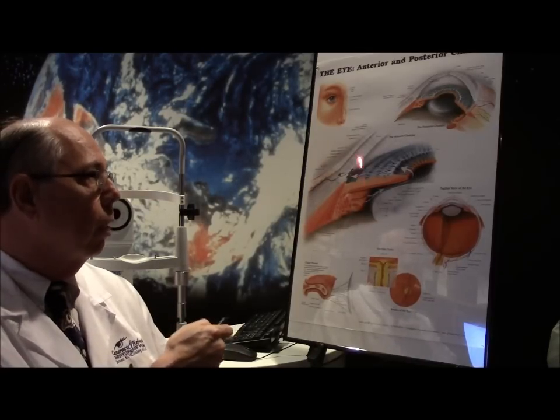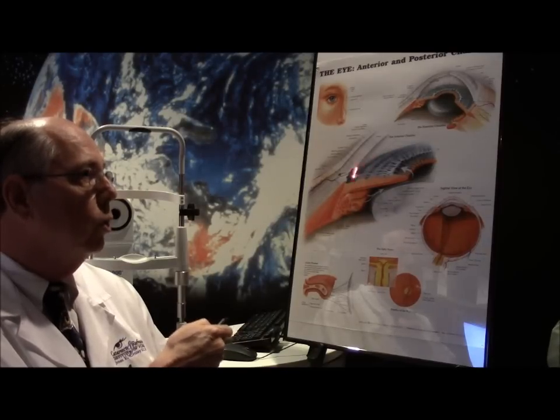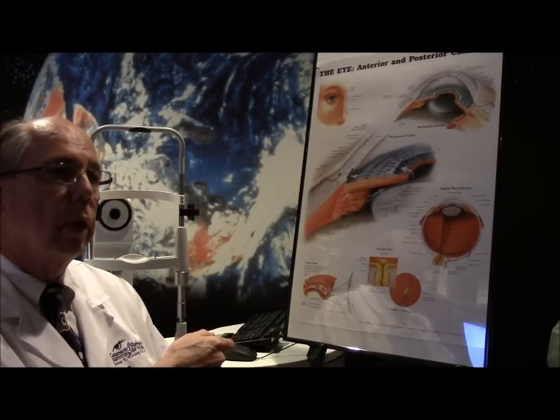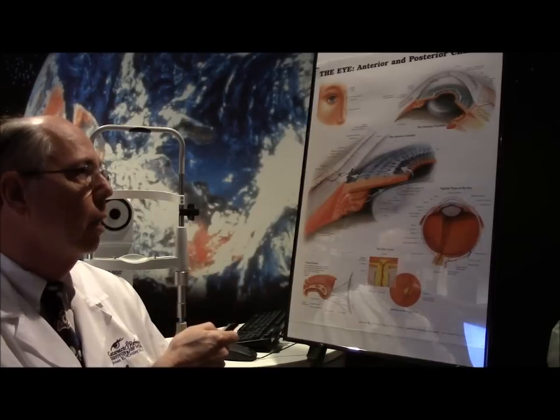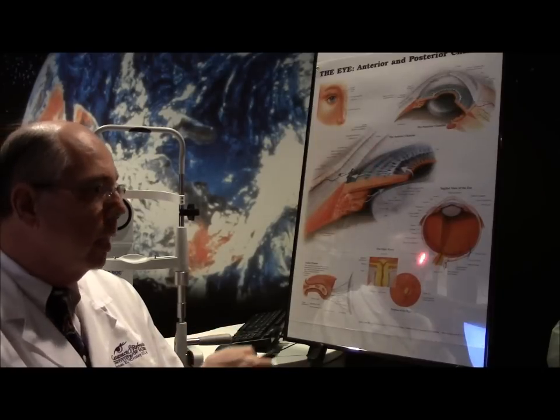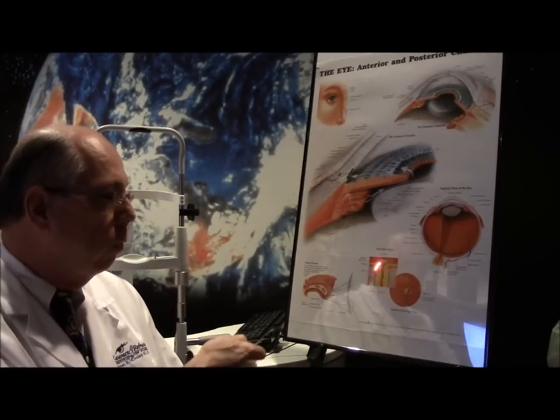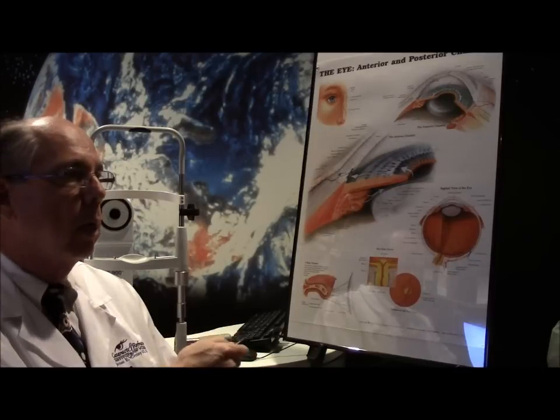In open angle glaucoma, this pressure would slowly rise, and it would not usually be to that level. It might be 25 or 30 or whatever the number would be, and over time that increased pressure damages the nerve in the back. So this nerve gets damaged over time from open angle glaucoma.